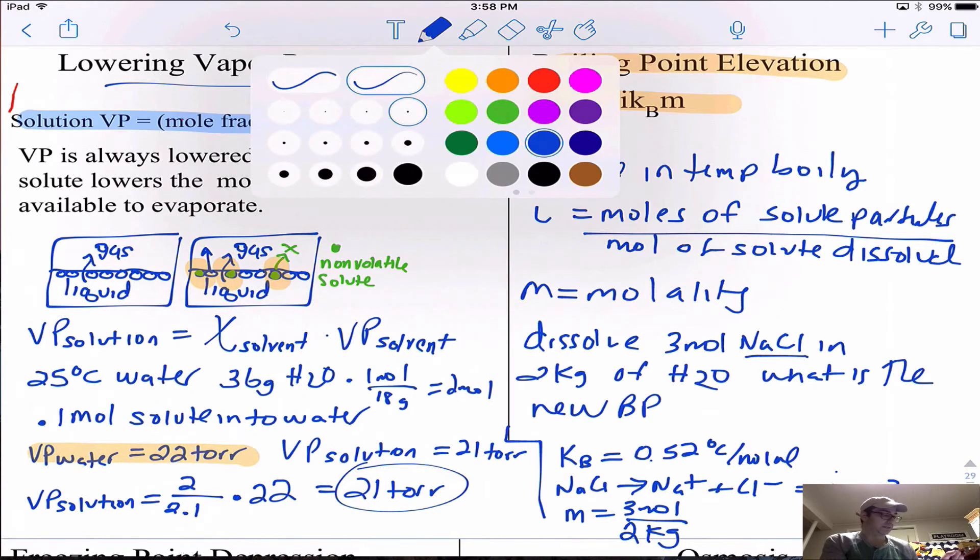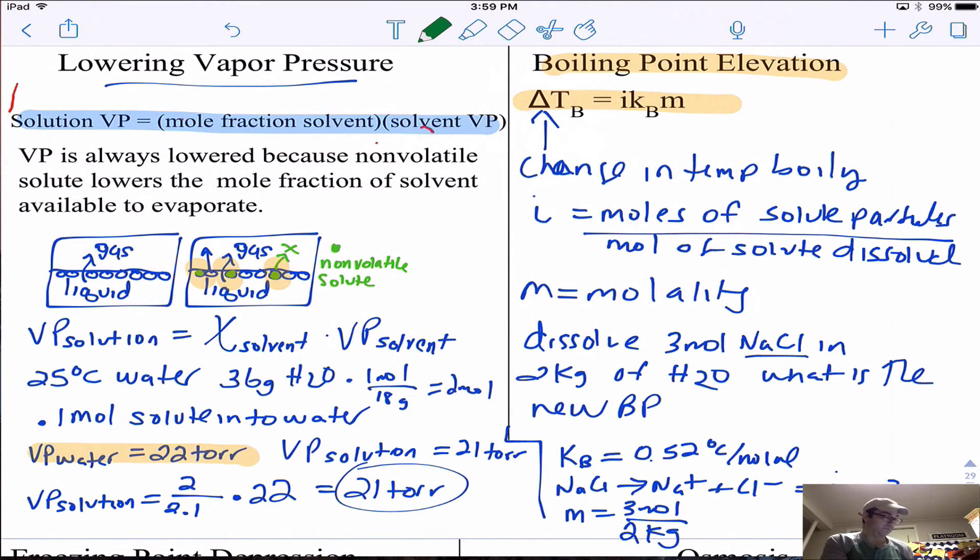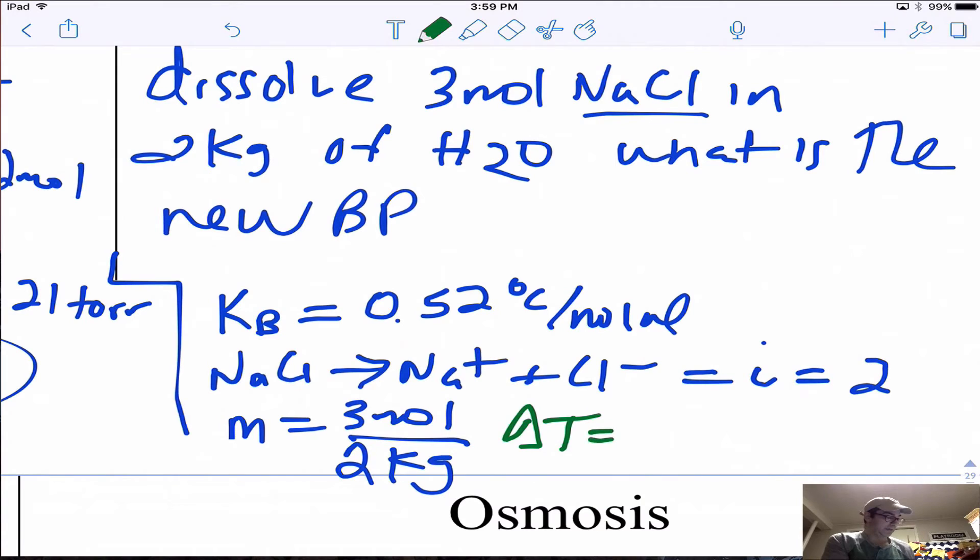Let's put all these values in: ΔT = KB × i × molality, so 0.52 times 2 times 1.5. We do 1.5 times 0.52 times 2, we get ΔT equal to 1.56. Water normally boils at 100, so our new boiling point will be 101.56 degrees Celsius.